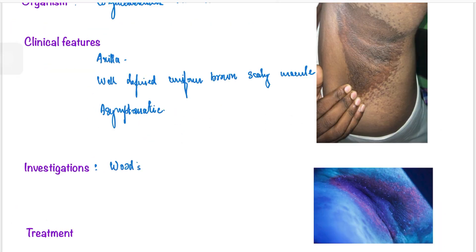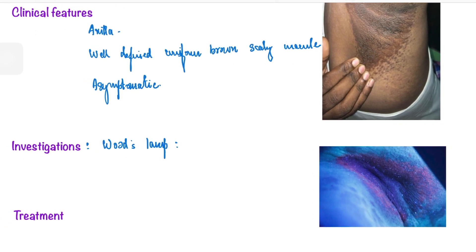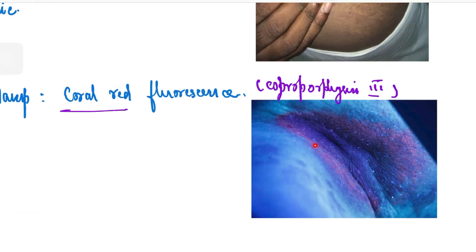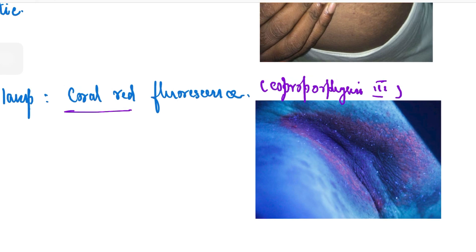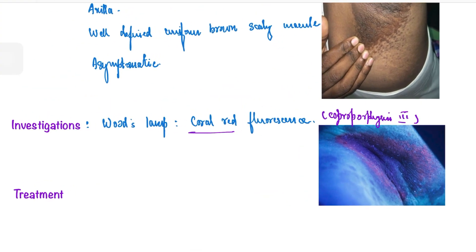If you do Wood's lamp examination of erythrasma, it will show coral red fluorescence. This coral red fluorescence is due to the production of coproporphyrin 3. If you do Gram stain or KOH, you would see fine filamentous bacteria.